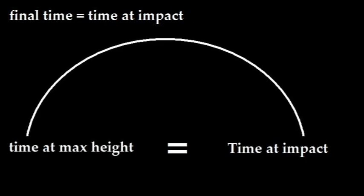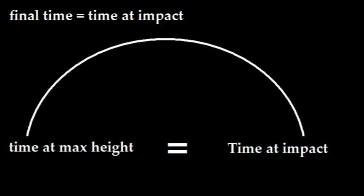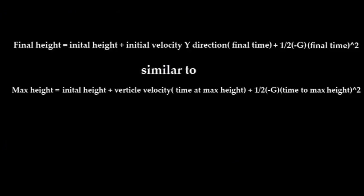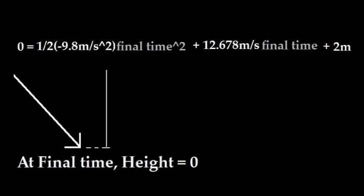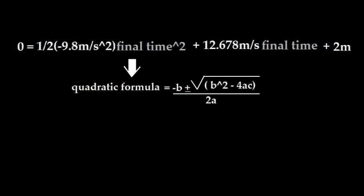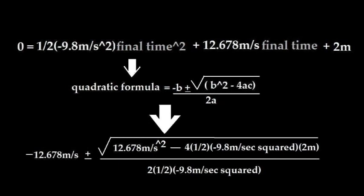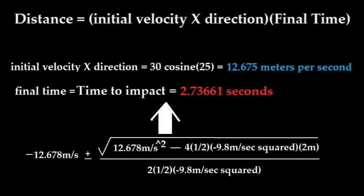Now the only unknown we have is the final time. Final time is equal to time at impact. Had there been no initial height of 2 meters, we could have solved the final time by doubling the time at maximum height. However, in order to consider the 2 meters difference we will have to — you guessed it — solve using the final height equation. Final height, similar to the max height equation, equals initial height plus the initial velocity in the Y direction multiplied by final time, plus one half the gravity — which is a negative vector — multiplied by final time squared. At the time the projectile impacts, the height is zero. So we use the quadratic formula: negative B plus or minus the square root of B squared minus 4AC, all divided by 2A. We solve this and find that the final time is equal to 2.73661 seconds.